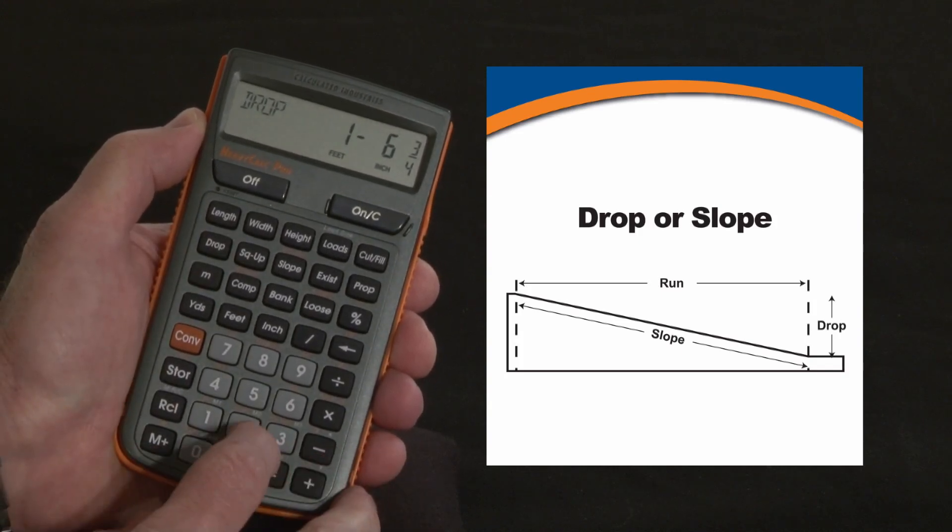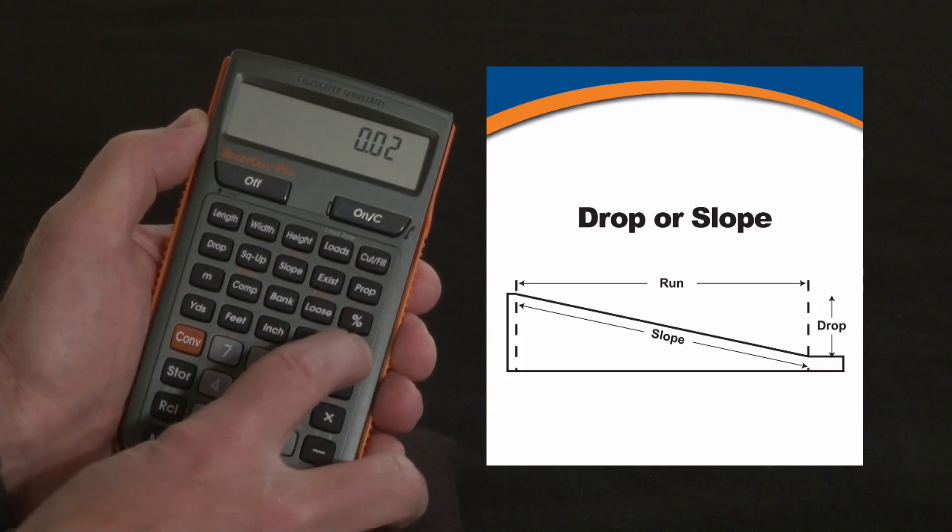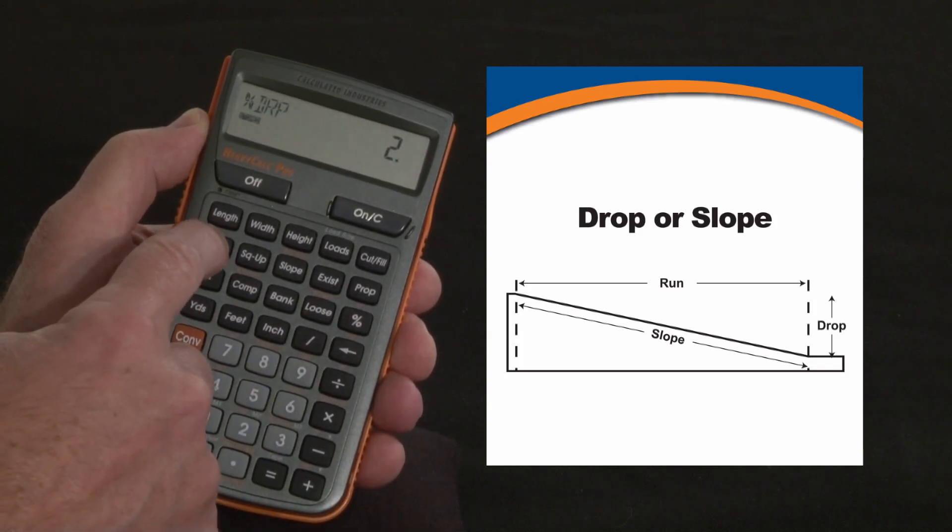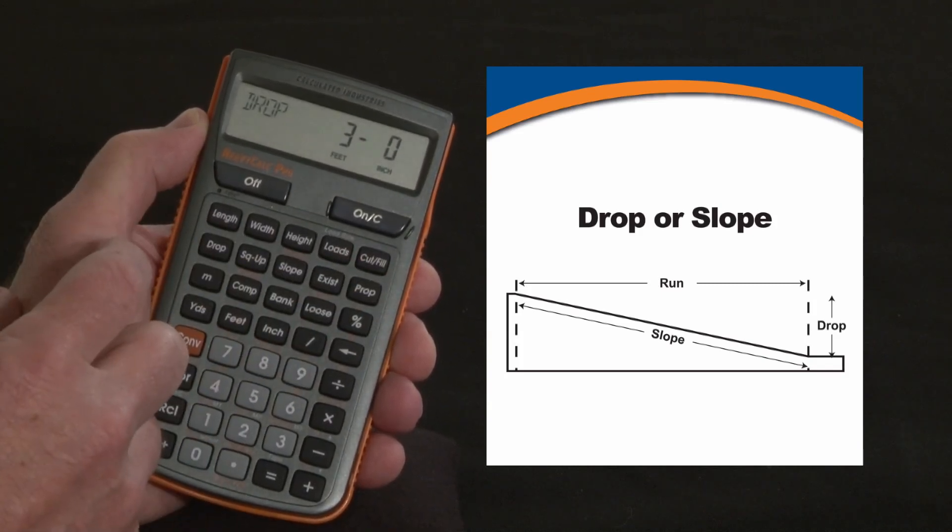You can also enter that as a percentage. Two percent is my drop, and over that entire run you'll be down an even three foot.